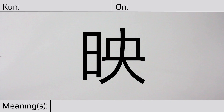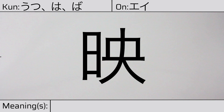Welcome to this lesson on Japanese kanji. Today, we'll be discussing this character. This kanji has a kunyomi of Utsu, Ha, or Ba, and it has an onyomi of Ei. This character means reflect or project.